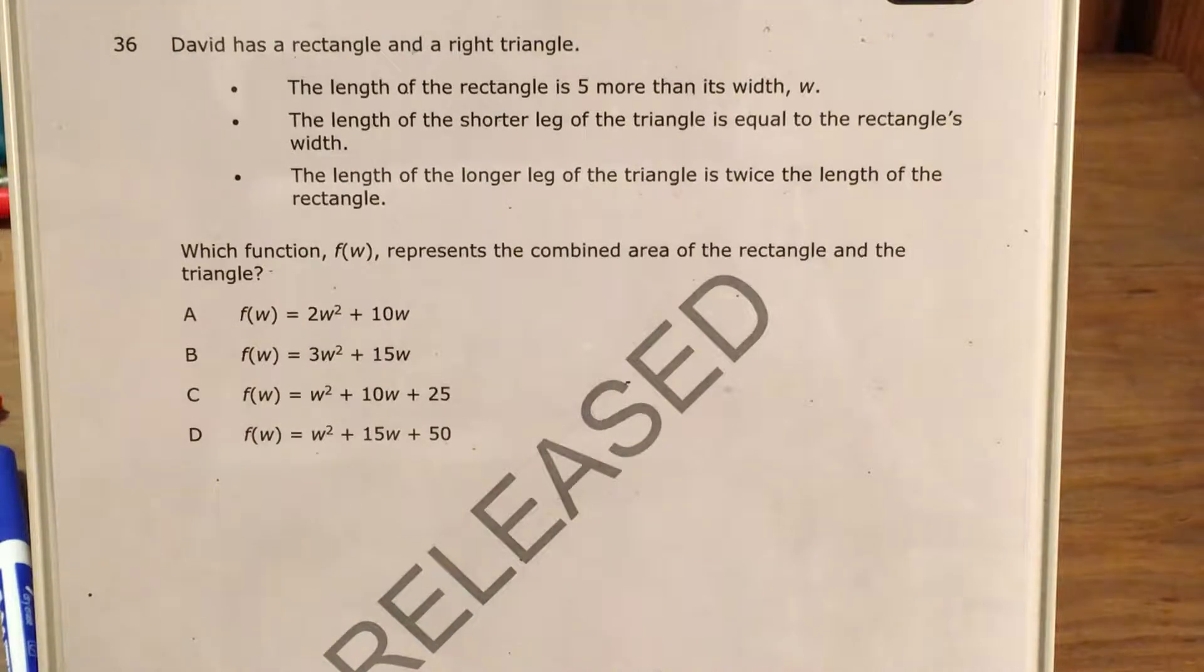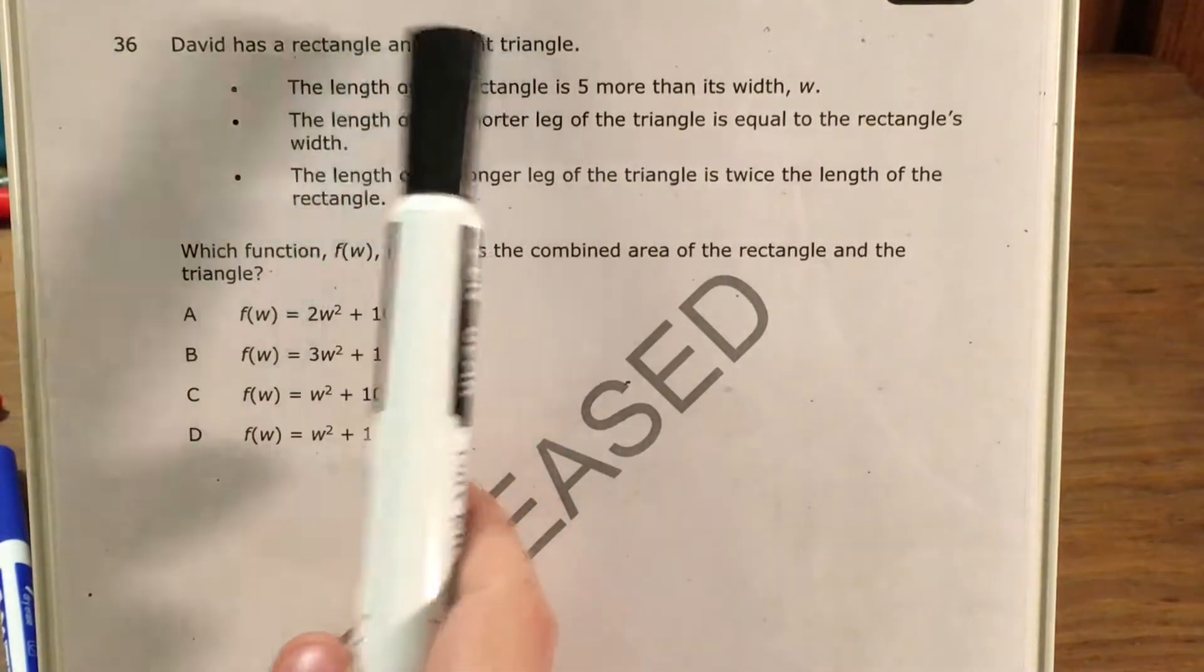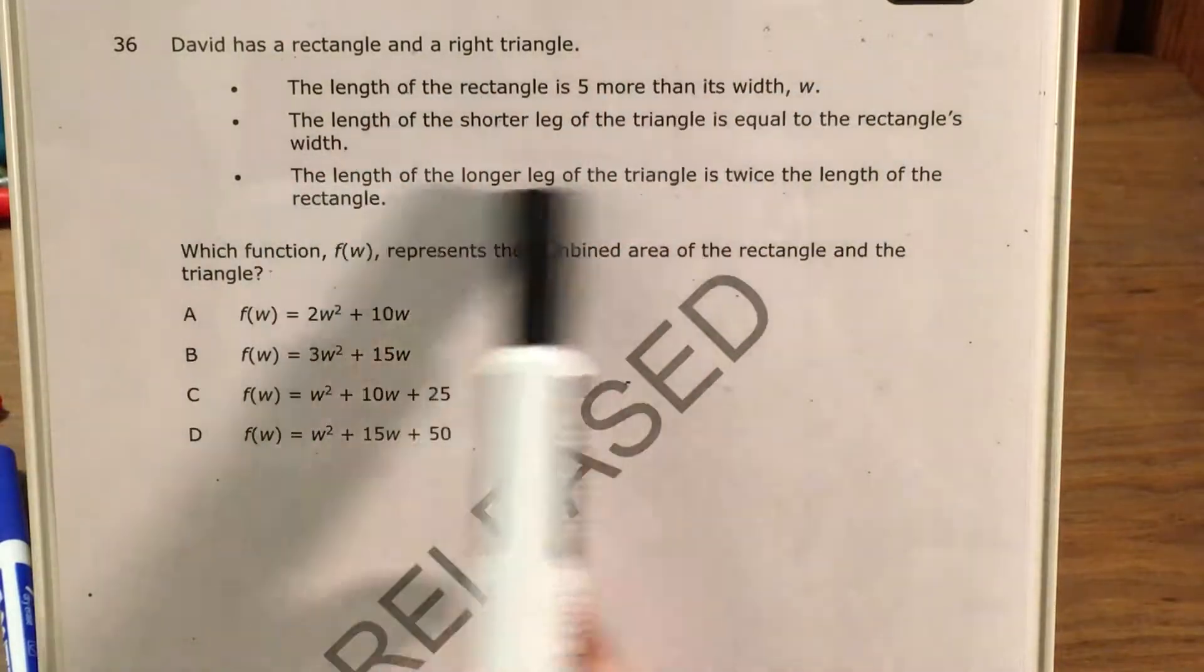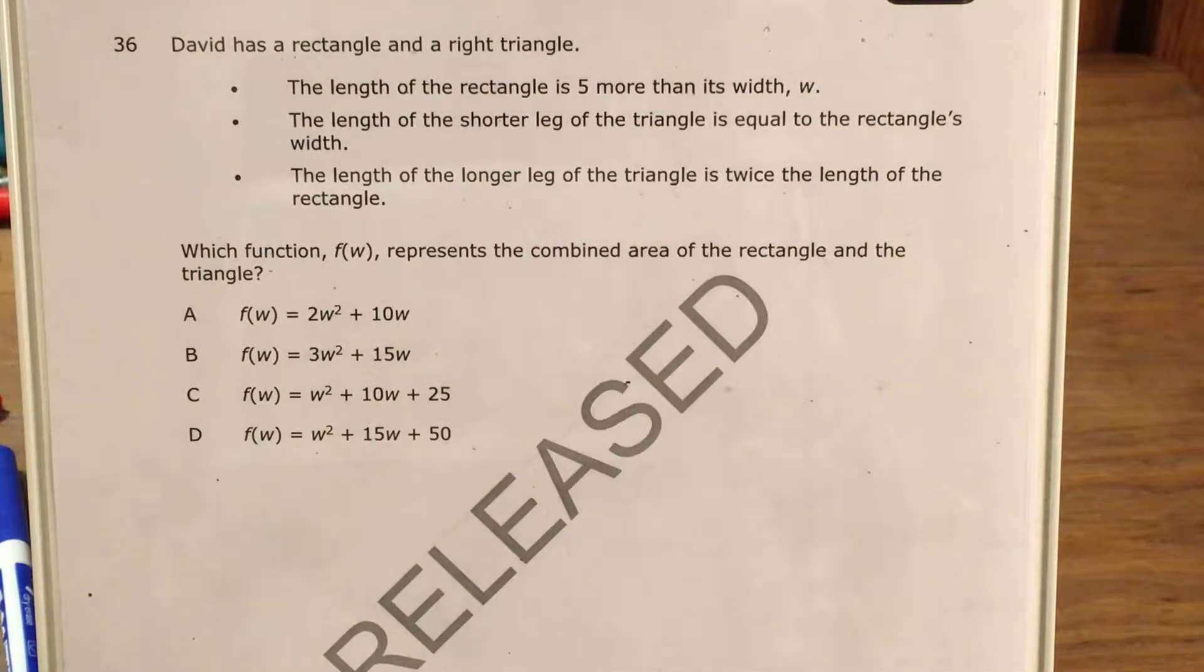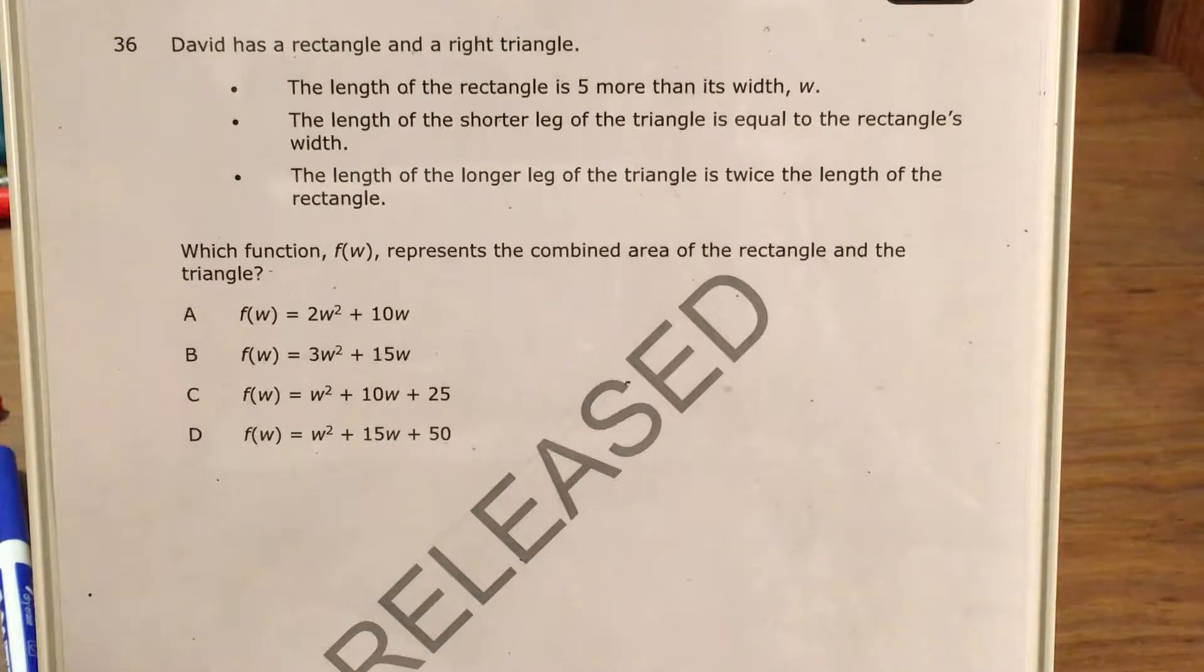What's up math scholars and math haters, this is Mr. W. Today we're going to tackle question 36 in the Math 1 questions that North Carolina released this past school year. The question tells us that David has a rectangle and a right triangle. It gives us information all stemming from the fact that we call the width of the rectangle W, and we're supposed to find the combined area of the rectangle and the triangle as a function.